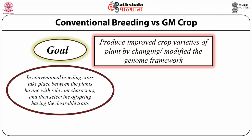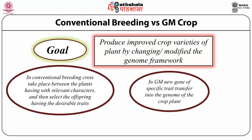In conventional breeding, the cross takes place between plants having the relevant character, and then we select the offspring which has the desirable trait. Whereas in the genetically modified type of breeding, we introduce a specific gene having a specific required trait into the genome of another crop. As a result, a transgenic crop is formed which has new additional features.